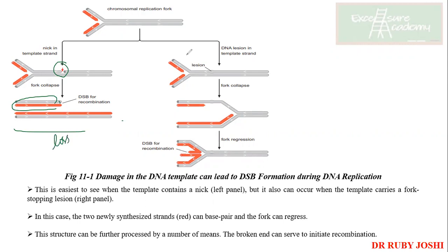Now, another scenario. Let's say that there is a DNA lesion in the template strand. What will happen? The fork is going to collapse. One strand over here — look at what is happening. Because of this fork collapse — fork collapse means the replication fork has been broken down — because of this, it is not able to complete the replication, but we apparently have a double-strand break in the area, and that is where we have recombination.